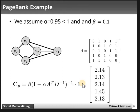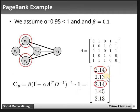After applying the PageRank formula, the final page rank values for each vertex are: v1 = 2.14, v2 = 2.13, v3 = 2.14, v4 = 1.45, and v5 = 2.13. The highest page ranks are for v3 and v1 at 2.14, making them the most important nodes. This is the mathematical approach to finding page rank centrality for every vertex.